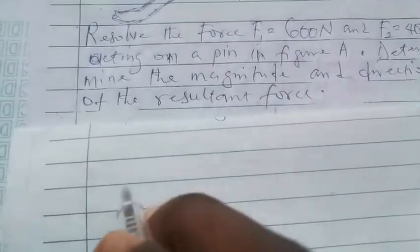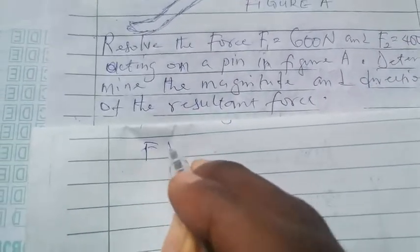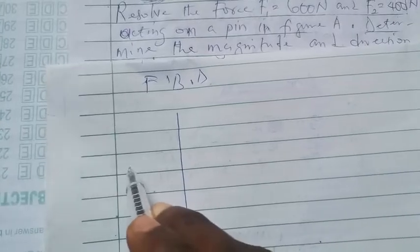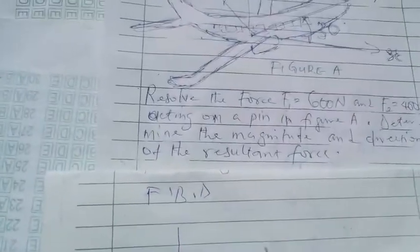So we start as usual. We draw the free body diagram of the system, so FBD. And I tell you in two dimension, FBD simply means your Cartesian coordinate system. So you're basically drawing your graph and then you're presenting everything you're seeing in the system.